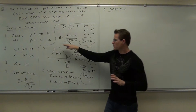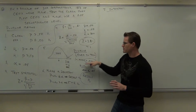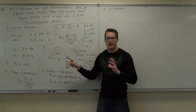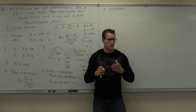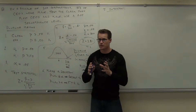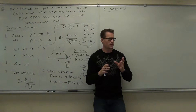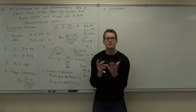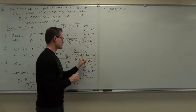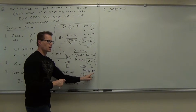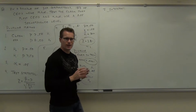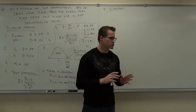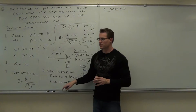With the P-value method, this is where it changes. You put the test statistic on your chart and look up the area in the table, depending on whether you're a left-tail, right-tail, or two-tail test. You look up your area — that is your P-value. You compare that P-value to your alpha. If it's smaller than alpha, you reject H sub 0. If it's not smaller than alpha, you fail to reject.